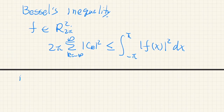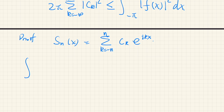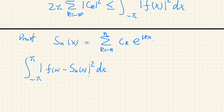First, let us define S_n(x) as the partial sum of the Fourier series, that is k from negative n to positive n of c_k times e^{ikx}. Then let's consider the integral of the modulus of f(x) minus S_n(x) squared. Since we are considering complex Fourier series, this absolute value means the absolute value of a complex number.